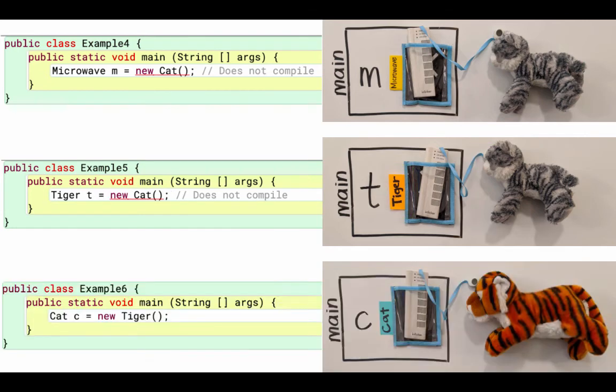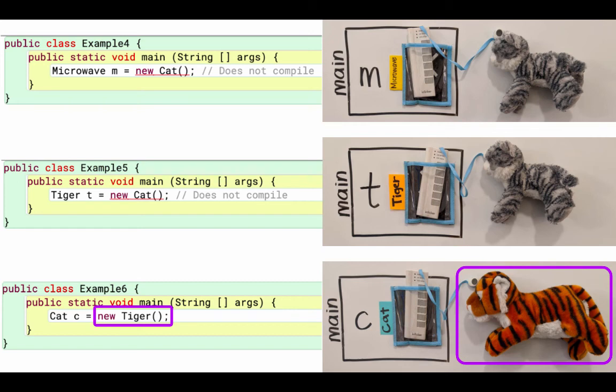Let's look at an example that does work. In example six, I have a cat reference that references a tiger. Does a tiger have all the methods that a cat has? Yes, it does. We're used to seeing situations where the type of the object was the same as the type of the variable, but here the type of the object is a subclass or child class of the type of the variable. This last example does compile because a tiger is a type of cat, so we can reference a tiger with a cat reference.